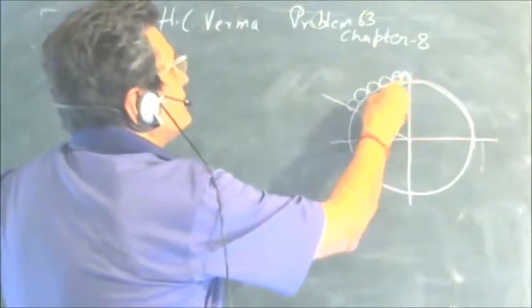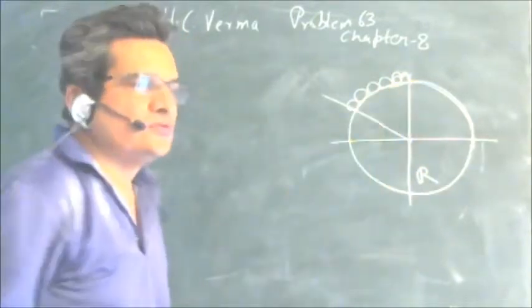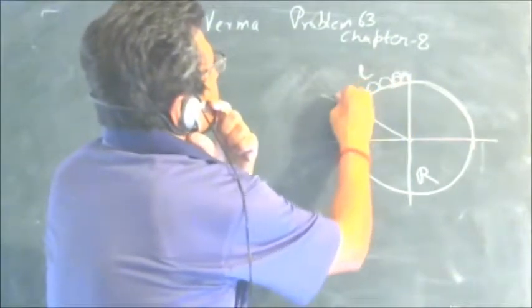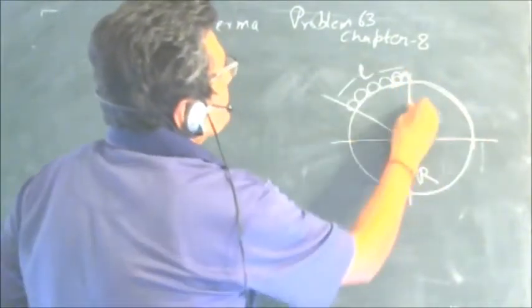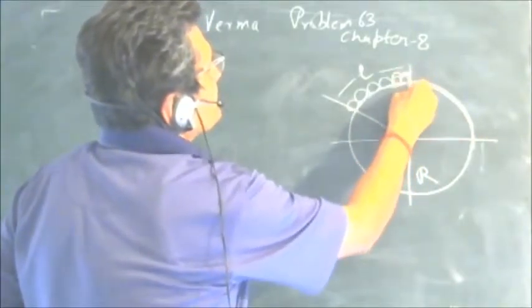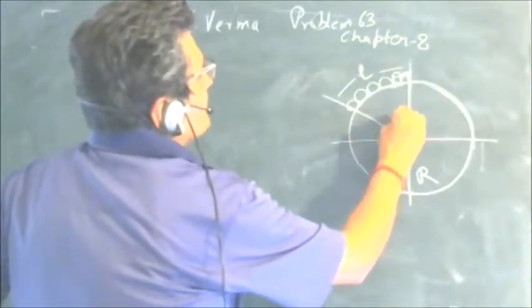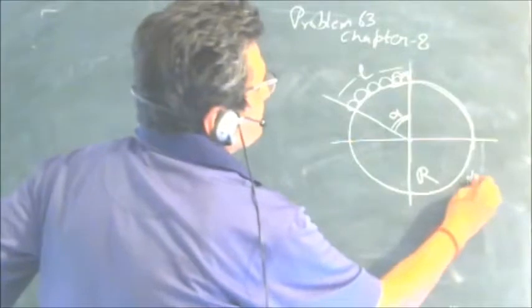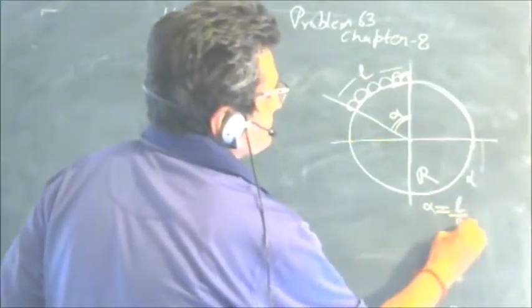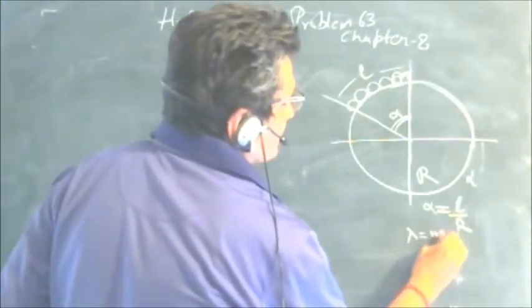What is given is a sphere of radius R. The surface of the sphere is smooth. There is a chain, the length of the chain is L. The arc which the chain subtends — the chain is placed starting from the topmost point — so the angle subtended by the chain would be alpha = L/R. And mass per unit length lambda = M/L.